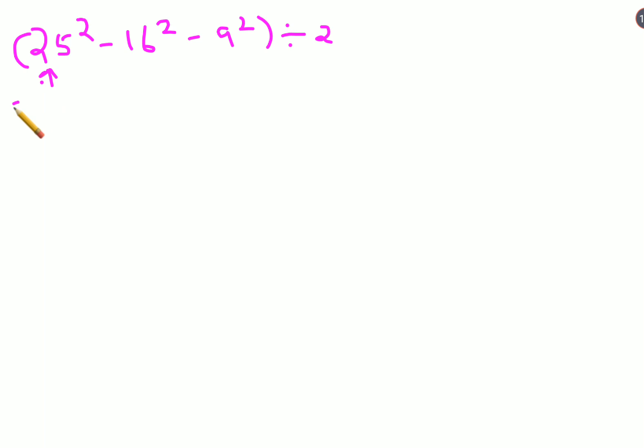25, if you look closely, can be written as (16 + 9)² - 16² - 9². So let's do the expansion of this one.